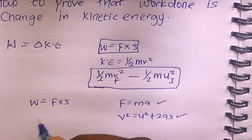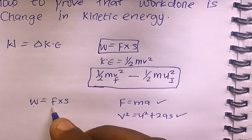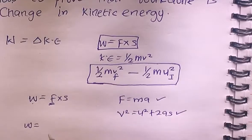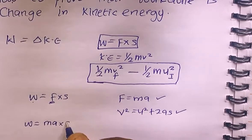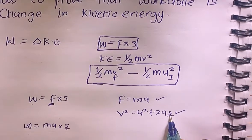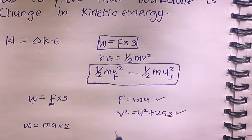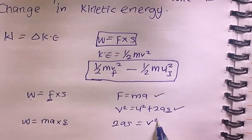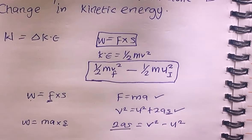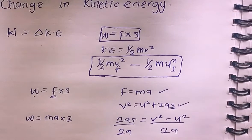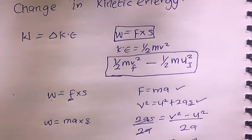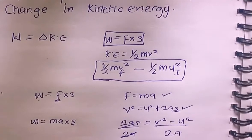We have W = F × x, and the simplest formula for force is mass times acceleration, so W = ma × x. Now we need to make s the subject of the formula from v² = u² + 2as. Rearranging gives 2as = v² − u², and dividing both sides by 2a we get s = (v² − u²) / 2a. So displacement x equals (v² − u²) / 2a.